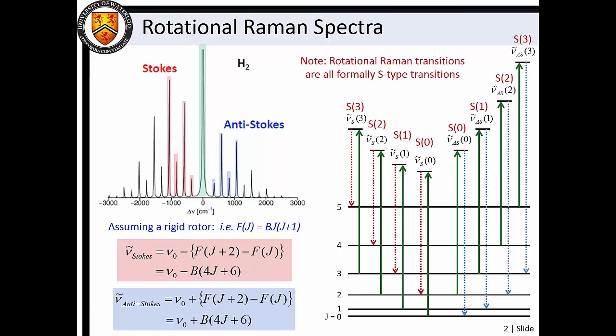Thus we see that rotational Stokes and anti-Stokes transitions are both formally S-type transitions, wherein the excited j value is 2 units larger than the ground state j value.